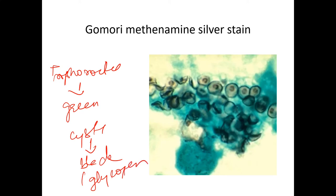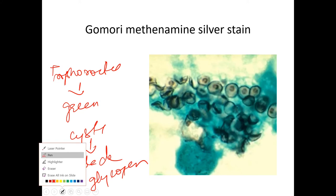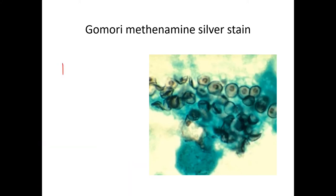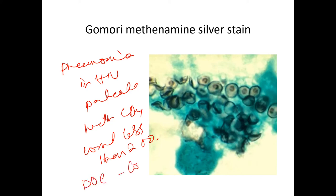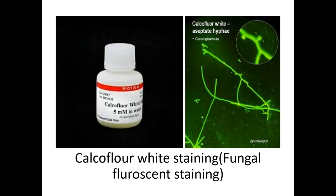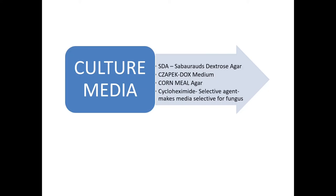Pneumocystis carinii causes pneumonia in HIV patients with CD4 count less than 200. The drug of choice is cotrimoxazole. Calcofluor White is a fluorescent stain used to visualize fungal elements.